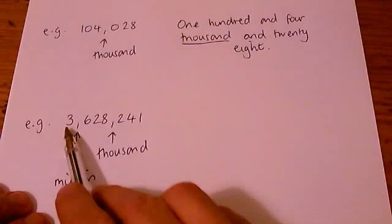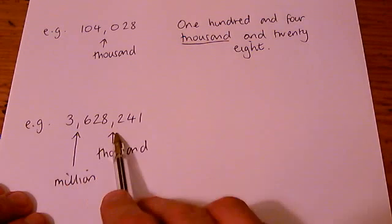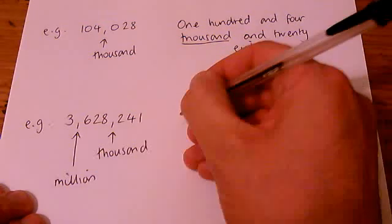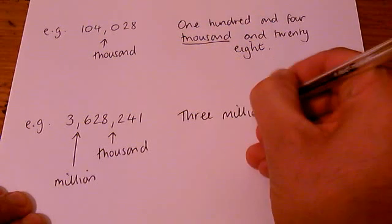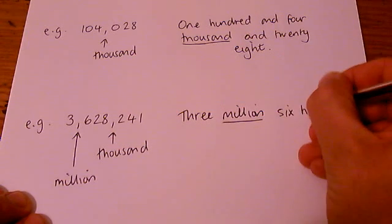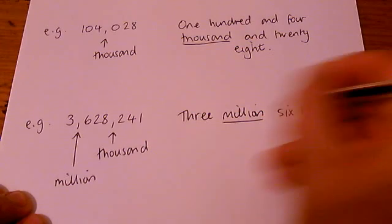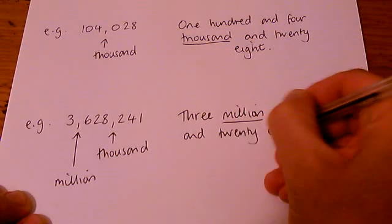So this is a really large number, three million, six hundred and twenty-eight thousand, two hundred and forty-one. And then two hundred and forty-one.